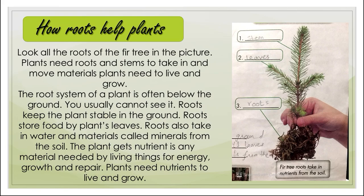A nutrient is any material needed by living things for energy. For example, plants get their food from sunlight, and they also get water absorbed in the soil through their roots. Plants need nutrients to live and grow. Plants use the process of photosynthesis — where plants get food from sunlight and water.